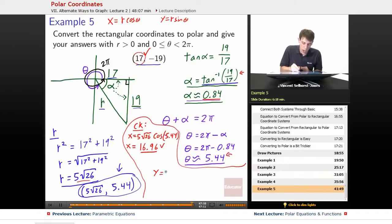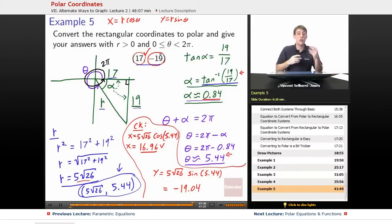Same thing for y. y is equal to r times sine theta. Our r here is 5 root 26, and our sine is 5.44. We plug that into a calculator and we wind up getting negative 19.04. Compare that once again to negative 19. The only thing we're seeing here is a slight bit of round off error, so this checks out.